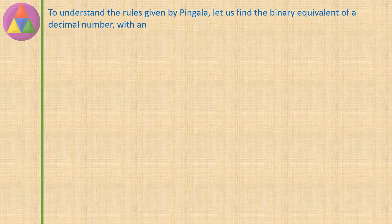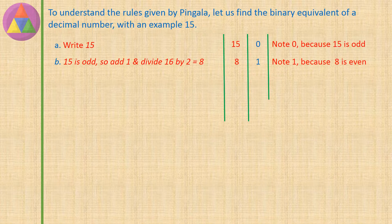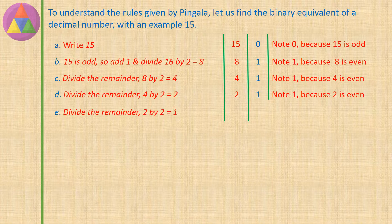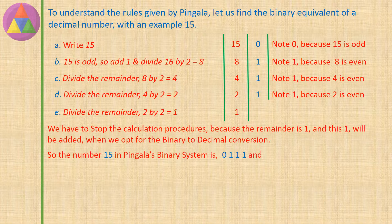To understand the rules given by Pingala, let us find the binary equivalent of the decimal number 15. Write 15. Note 0, because 15 is odd. Since 15 is odd, add 1 and divide: 16 ÷ 2 = 8. Write 8. Note 1, because 8 is even. Divide remainder 8 ÷ 2 = 4. Write 4. Note 1, because 4 is even. Divide remainder 4 ÷ 2 = 2. Write 2. Note 1, because 2 is even. Divide remainder 2 ÷ 2 = 1. Write 1. We stop here because the remainder is 1, and this 1 will be added when we convert binary back to decimal. So the number 15 in Pingala's binary system is 0111, calculated from left to right.